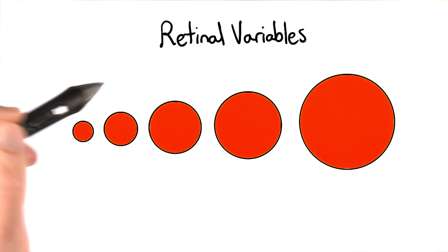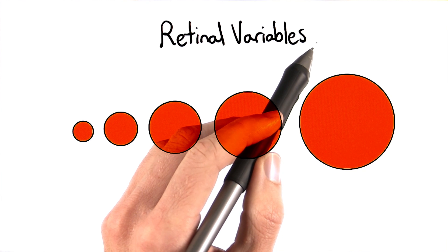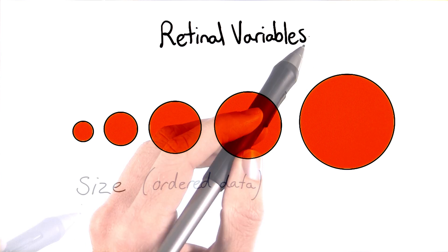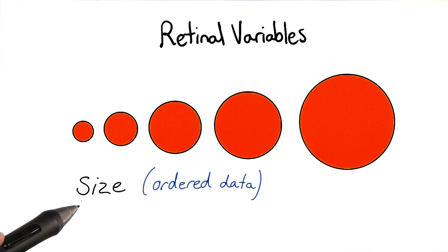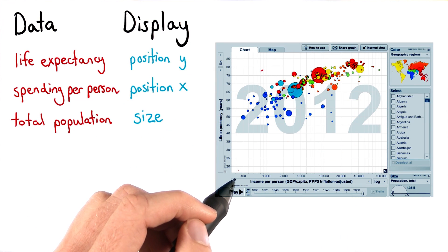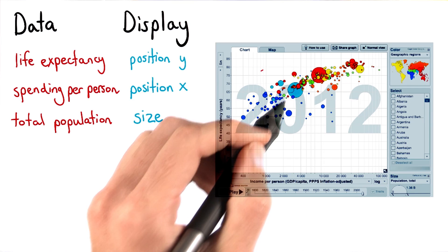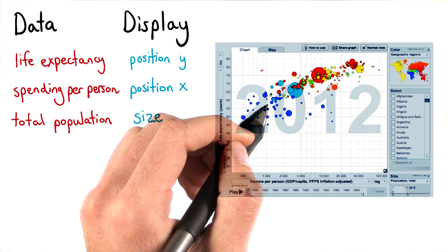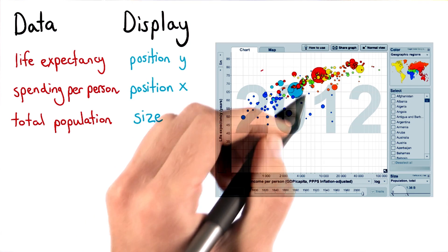We can use what are called retinal variables to encode additional variables for a data set. Size is an example of a retinal variable, and it's particularly good for ordered data. Going back to our world health data visualization, we can see that population is encoded by the size of each of the circles, or more precisely by the area of each point.